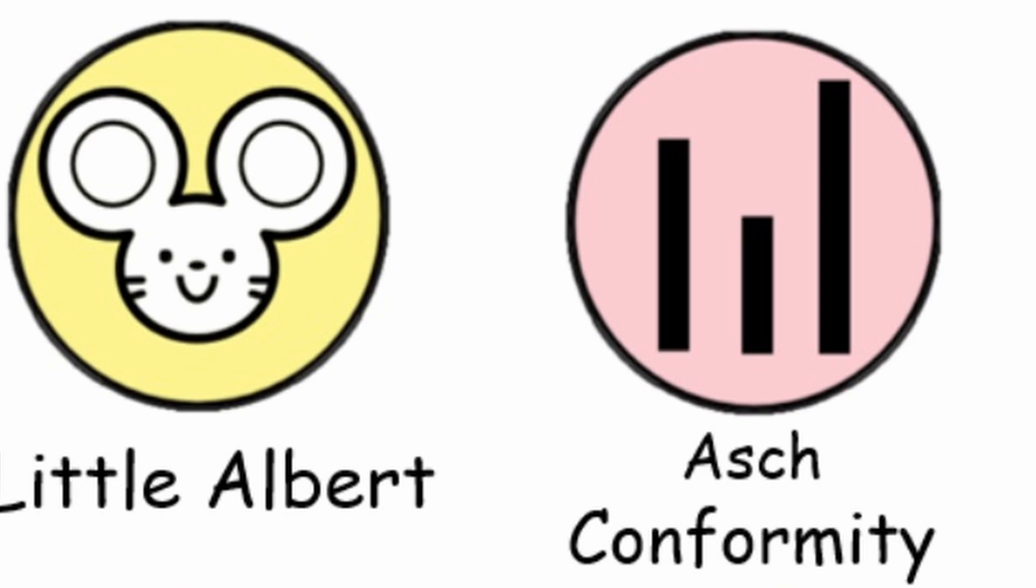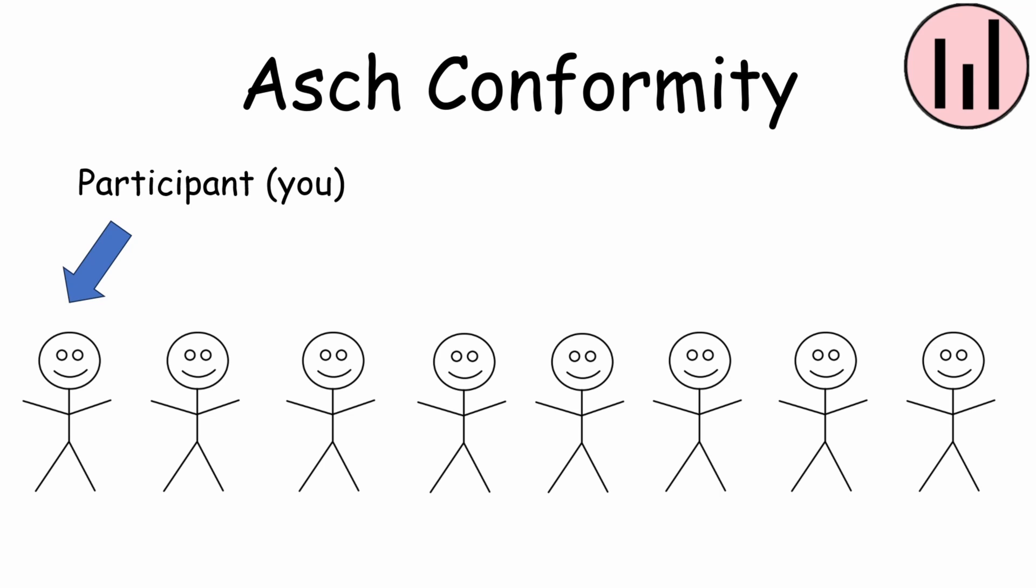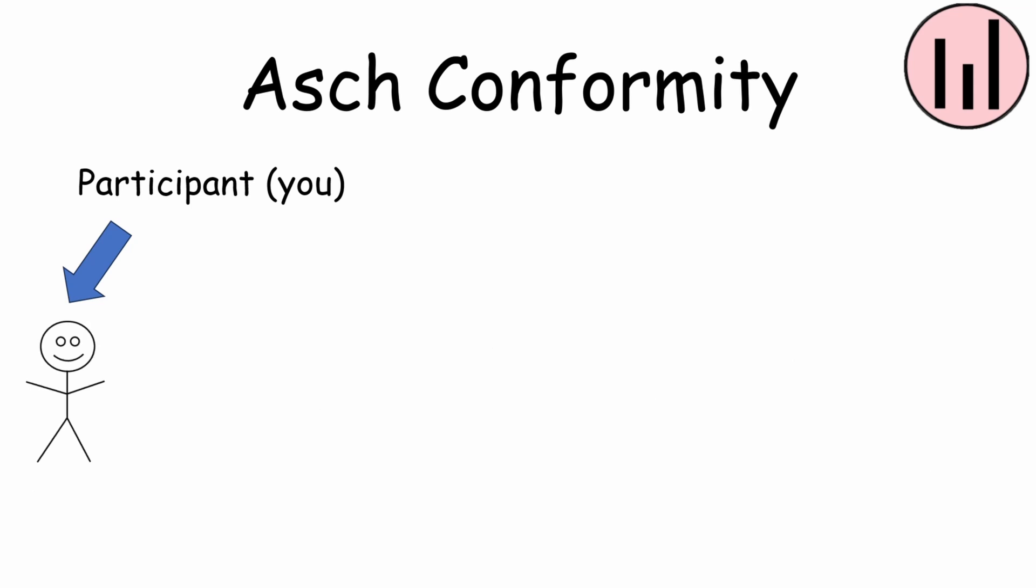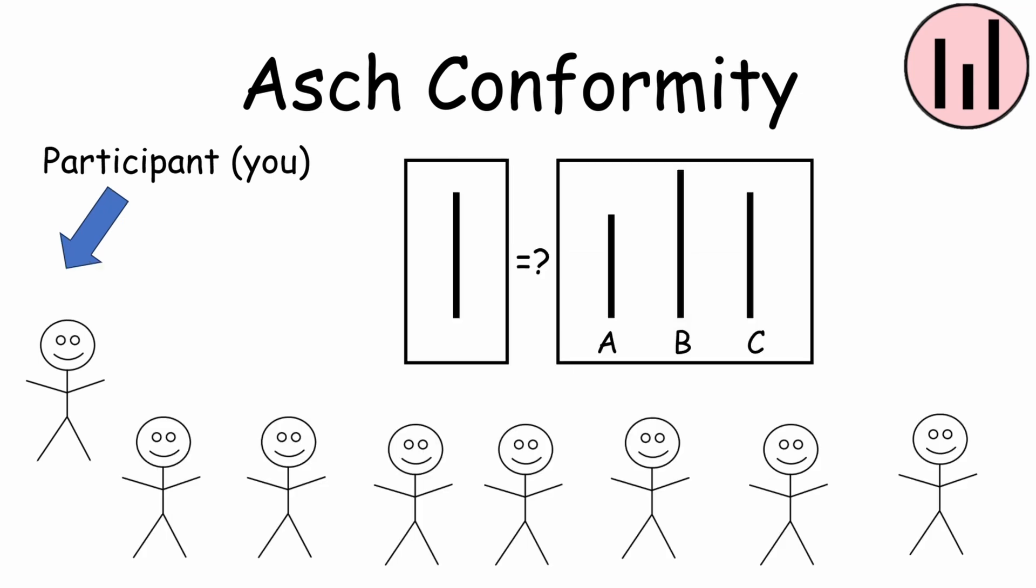Asch Conformity. You and seven other test subjects are brought into a room to test your perception abilities. Each of you is given a card with three lines, labeled ABC, and another card with the reference line. Your job is to choose which line is the same length as the reference line. Each participant must give their answers individually and you go last. Take a look and choose which of these lines fits the reference line. Now the other participants are giving their answers.